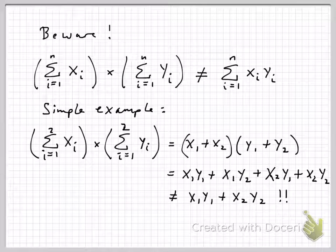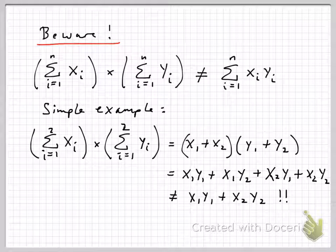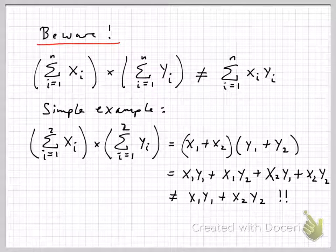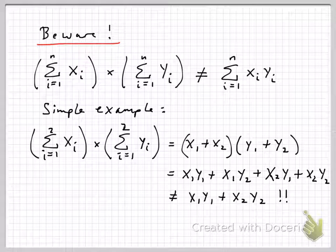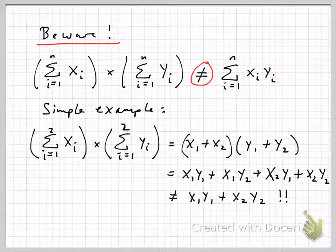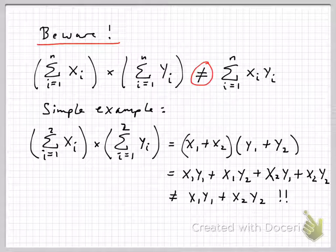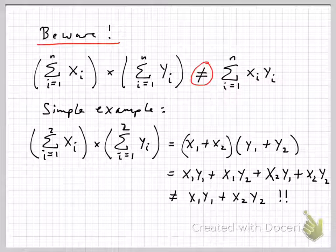So, a couple of related points. Beware common mistakes that people can make when they're doing this. If you multiply two sums, sum of xi times the sum of yi, that is not equal to the sum of the xi yi. It really follows from the previous point. Let's do a simple example and just see why it doesn't work.